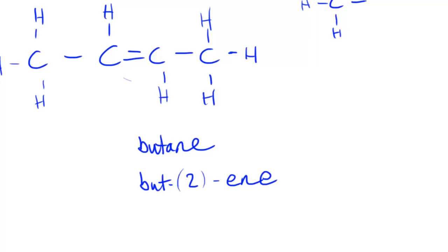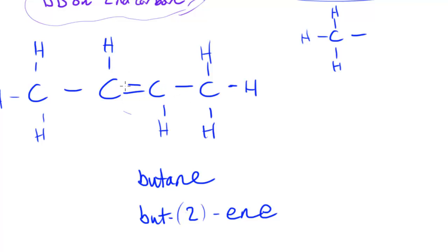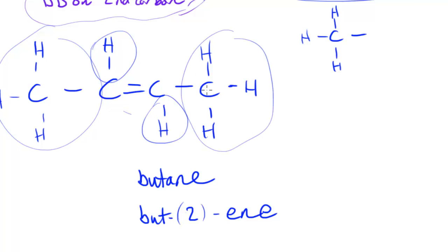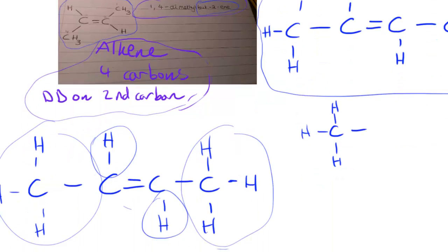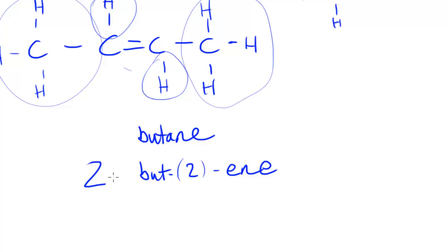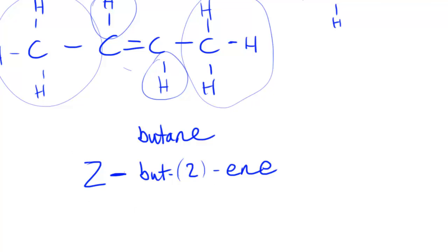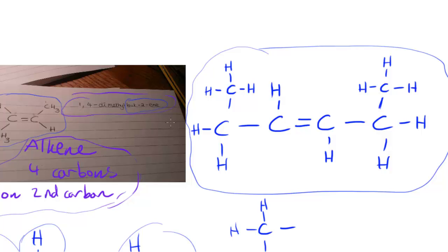The other thing we need to specify is the form of isomerism, since there are two different groups on each of the two carbons of the double bond — an H group and a CH3 group on each side. Since they are on opposite sides of the double bond, that's Z-isomerism. So we call this molecule Z-but-2-ene, and that's why we would call it that and not 1,4-dimethylbutene.